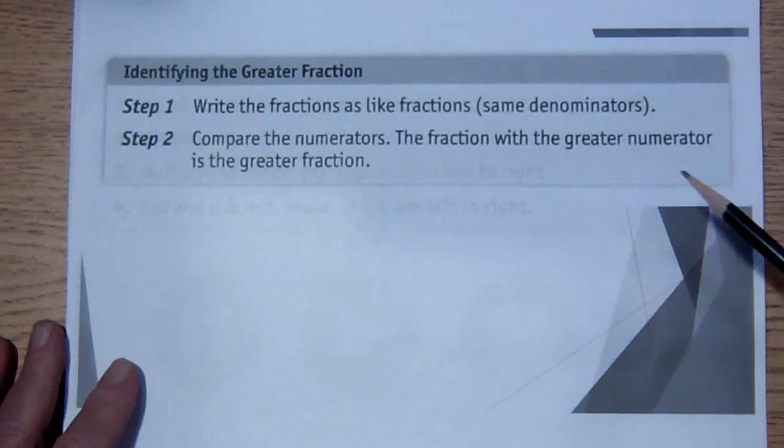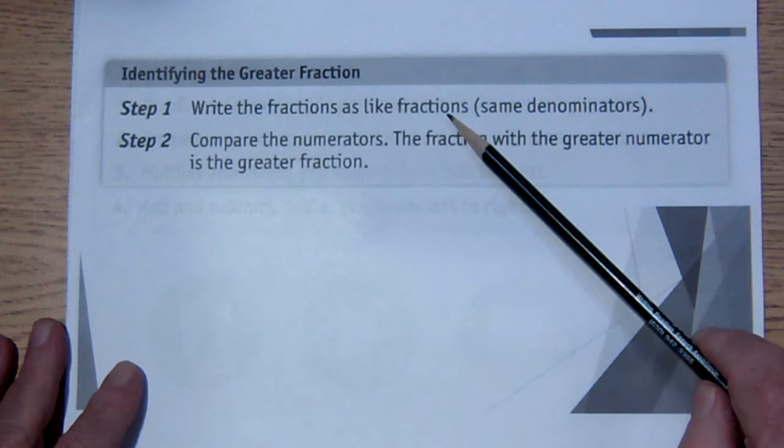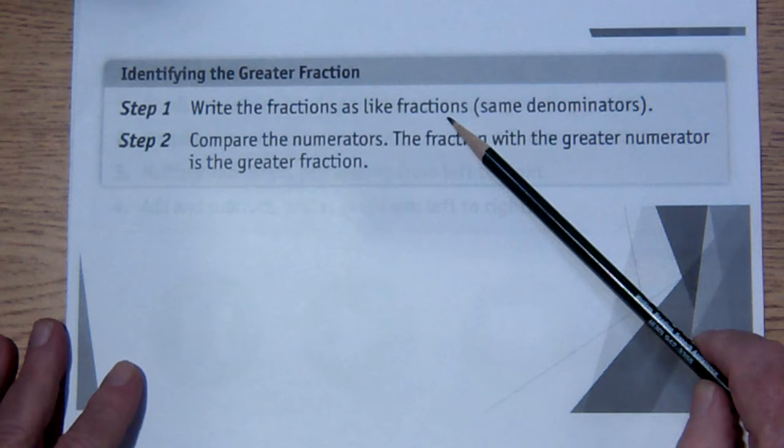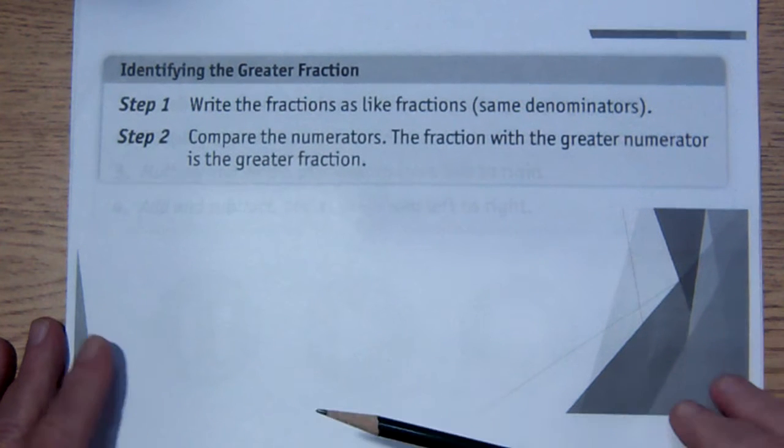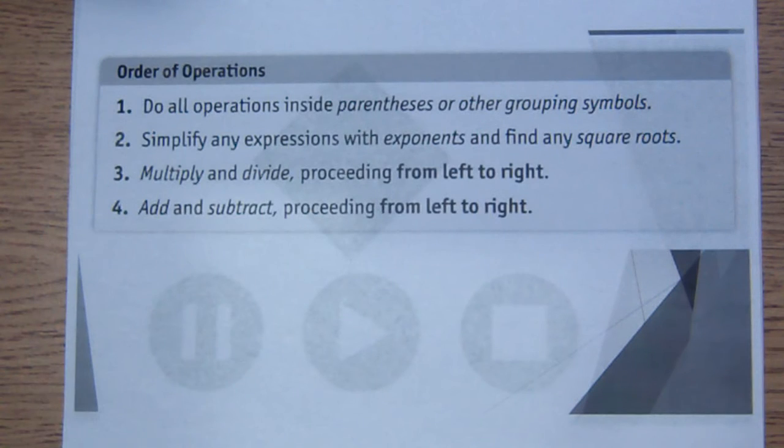Whenever we're looking at fractions, the way we determine which fraction is greater is we make sure that the fractions have the same denominators and then we can simply compare the numerators. The one with a bigger numerator, the greater numerator, is the greater fraction.